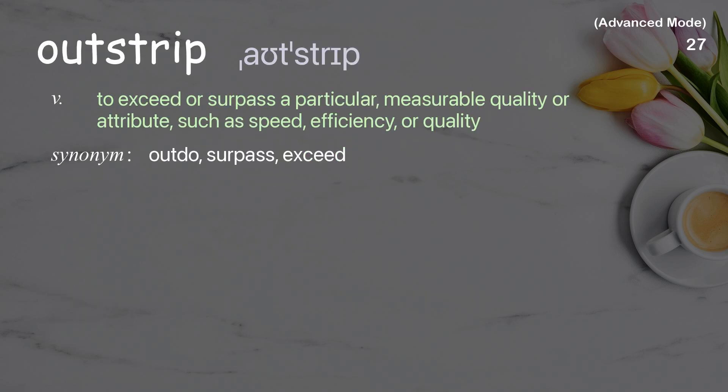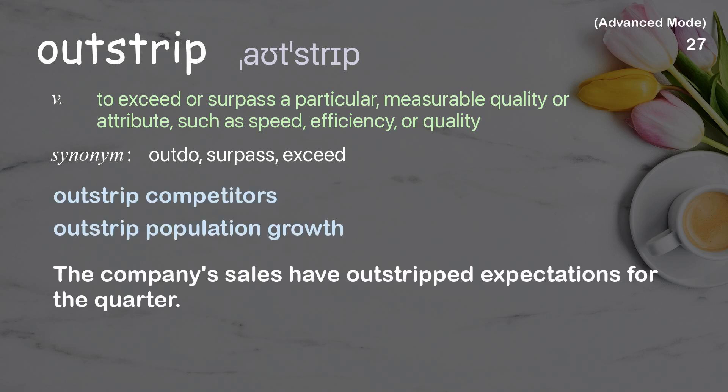Outstrip: to exceed or surpass a particular measurable quality or attribute, such as speed, efficiency, or quality. Examples: outstrip competitors, outstrip population growth. The company's sales have outstripped expectations for the quarter.